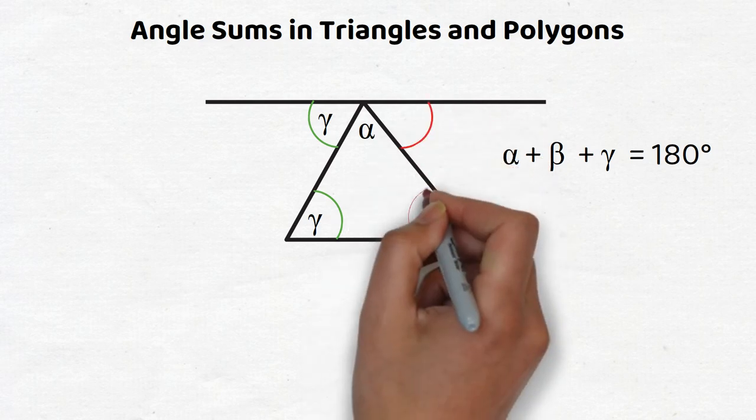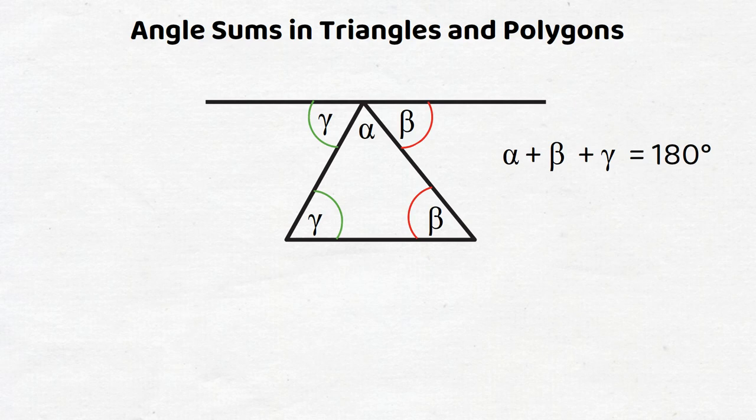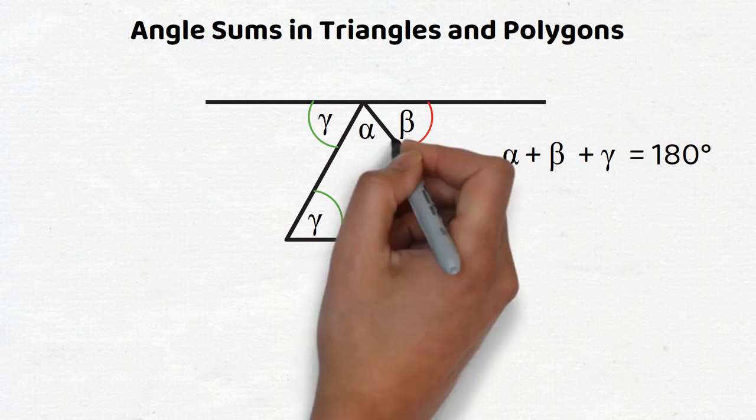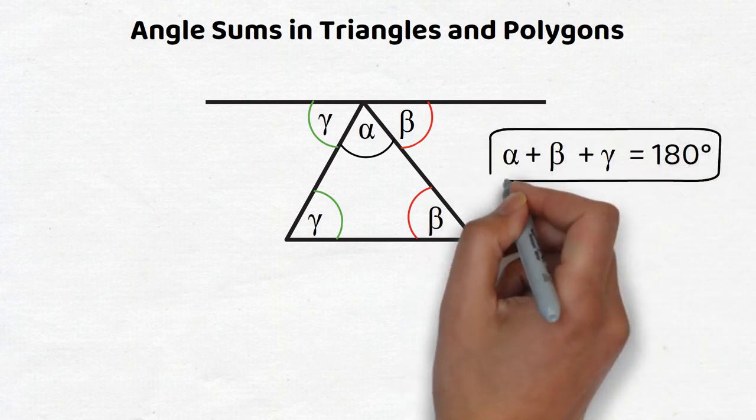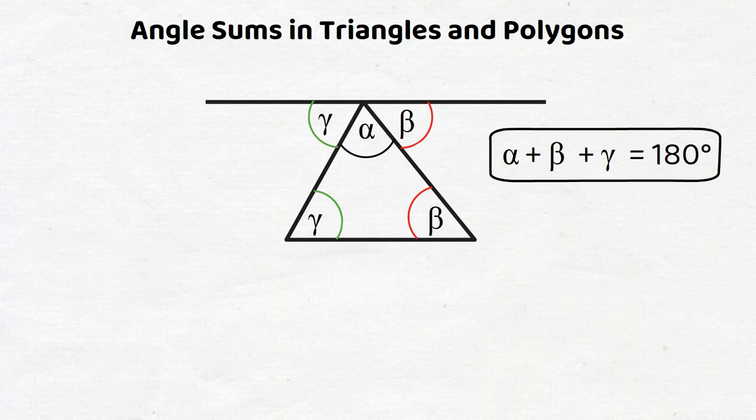As the two slanted lines of the triangle form transversals between the two parallel lines, we can apply our reasoning that Z-shaped angles, or alternate interior angles, are equal between parallel lines. It is now clear that α + β + γ form a straight angle, so its measure is 180 degrees.